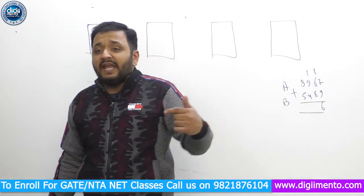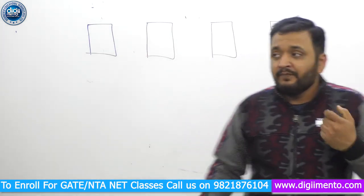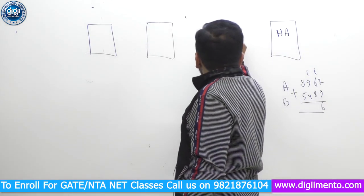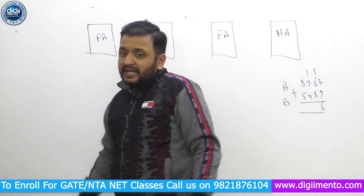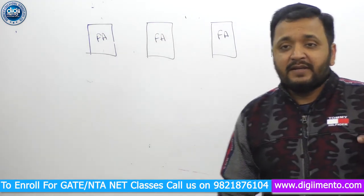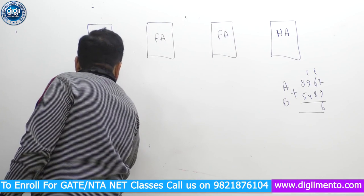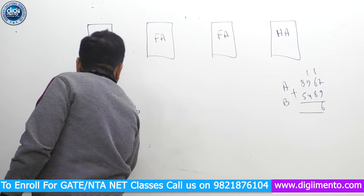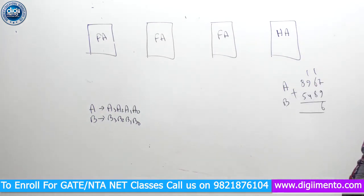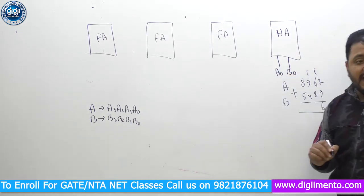So I have taken inputs A3, A2, A1, A0 and B3, B2, B1, B0. A0 and B0 are our LSB bits. I am applying them here — A0 and B0 — and from A0 and B0 through the half adder, you get a sum and a carry.